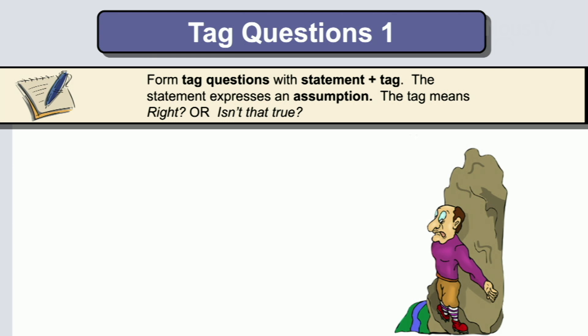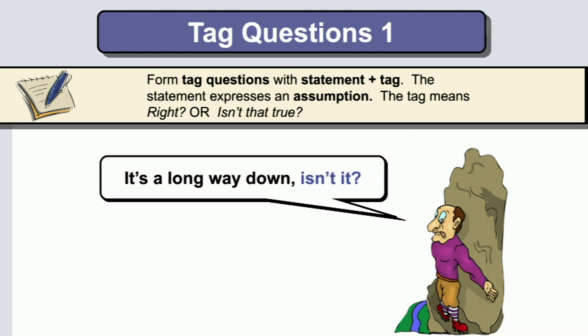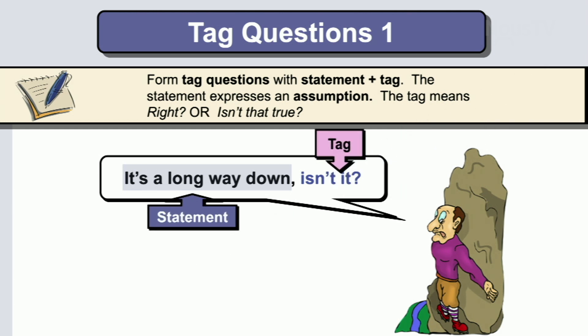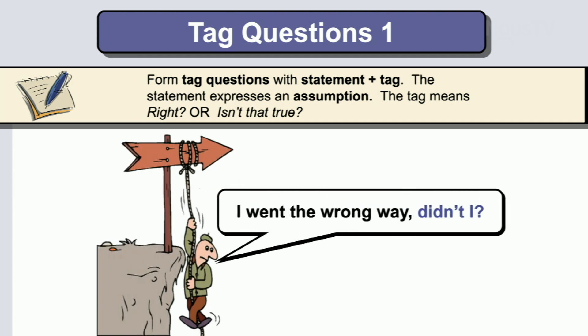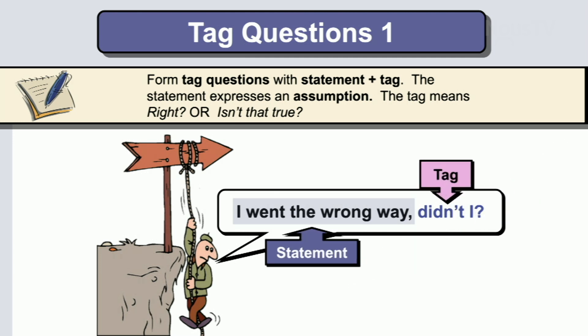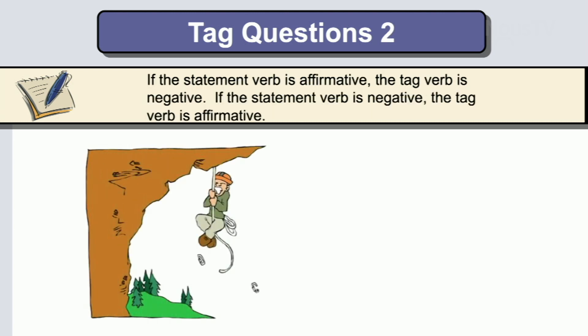Tag questions have a statement plus a tag. The statement expresses an assumption. The tag means 'right?' or 'isn't that true?' So: it's a long way down, isn't it? I went the wrong way, didn't I? Notice — one is affirmative, the other is negative. If the verb in the statement is affirmative, the tag is negative, and if the statement is negative, the tag is affirmative.